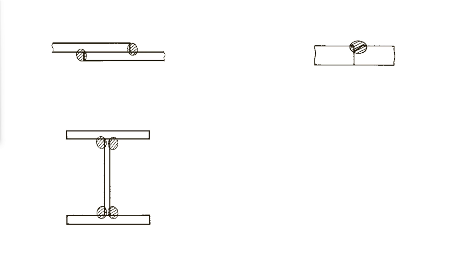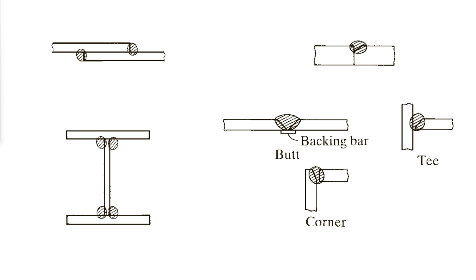Groove welds are those deposited in a gap or a groove between two parts to be connected. They are most frequently used for butt, T and corner joints. In most cases, one or both of the connected parts will have beveled edges called prepared edges. Although relatively thin material can be groove welded with no edge preparation.